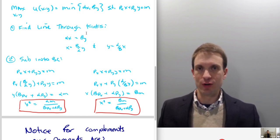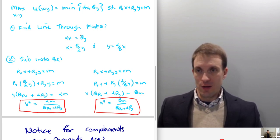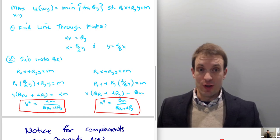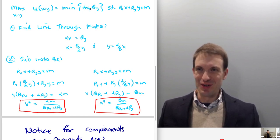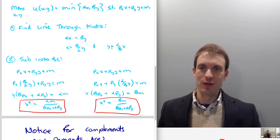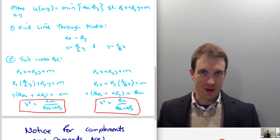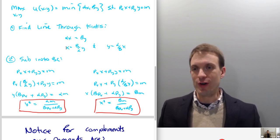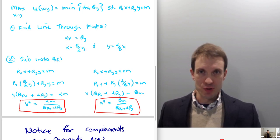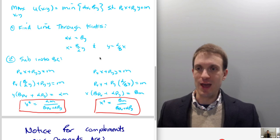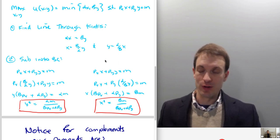I'll show a picture of that for my numerical example in a little bit. Essentially, we go to the utility function, replace the comma with an equal sign, solve for y, and this gives us the ray through the origin that collects the corners of our indifference curves. Once you've found this relationship, you substitute it into the budget constraint to find the optimal demand for each good.